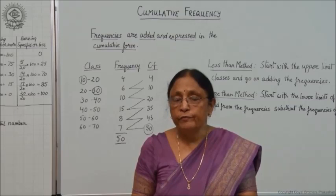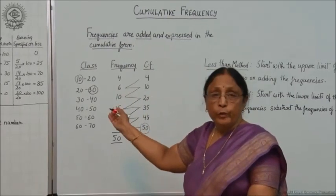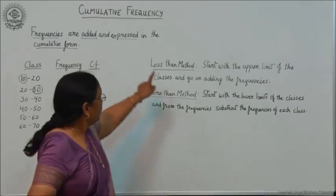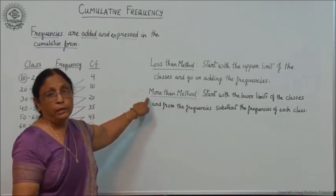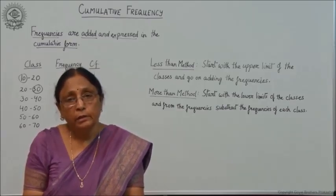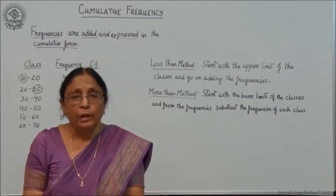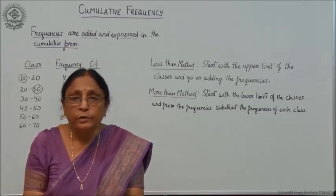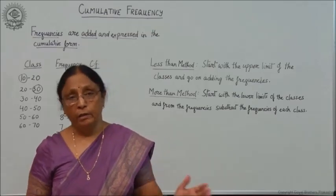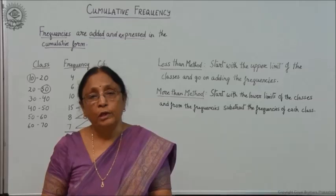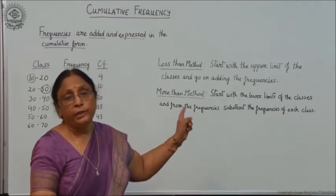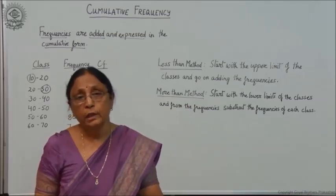Now we will take the two types of cumulative frequency. Here I gave you class intervals of 10 to 20, 20 to 30, and so on. The two types of cumulative frequency are: one is less than, and the second is more than. There are two methods of calculating cumulative frequency — one is called the less than method and the other is the more than method. When you are learning frequency graphs in the later chapters, you will understand that we need the less than and more than methods of cumulative frequency to plot the graph.